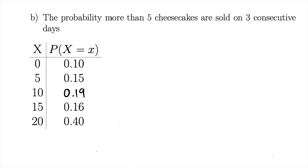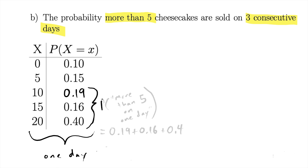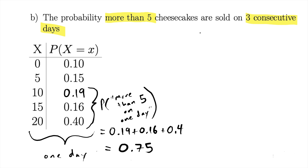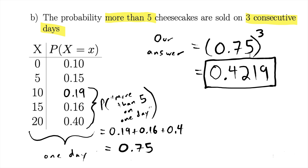In part b we want the probability of seeing more than five cheesecakes sold on three consecutive days. First, the probability of more than five on one day: that means 10 or 15 or 20, which gives 0.75. We need that to happen on three consecutive days, so 0.75^3 ≈ 0.419. We're using the multiplication rule for independent events, assuming each day is independent of the last.